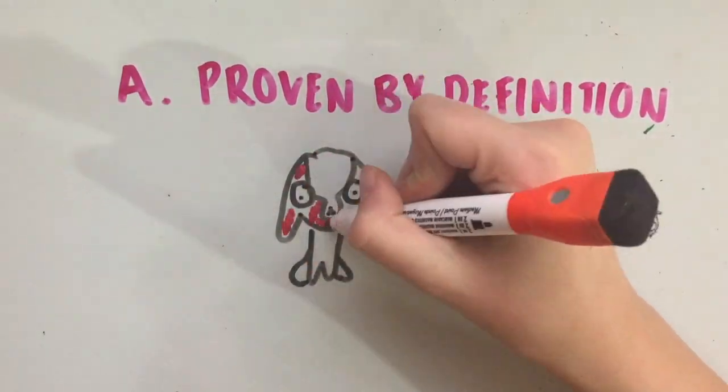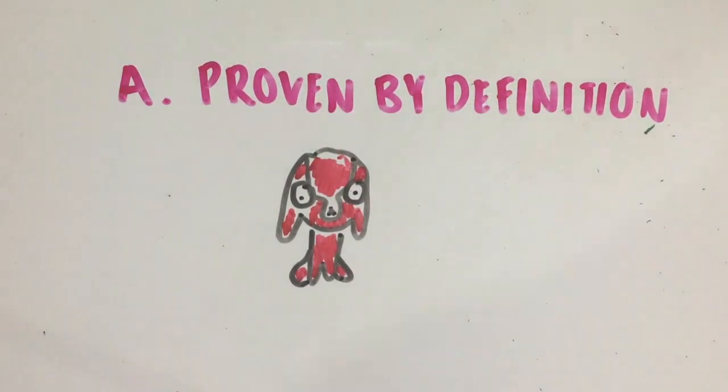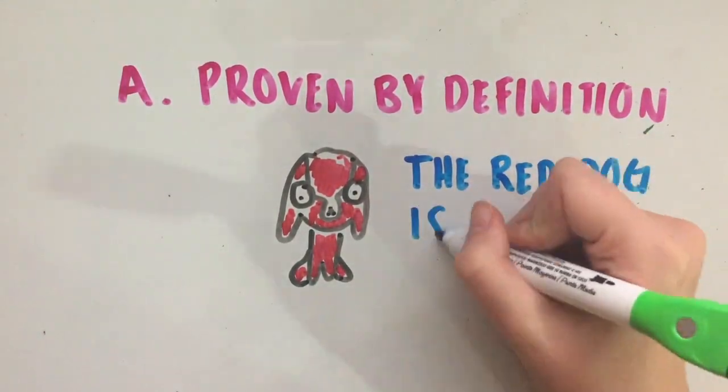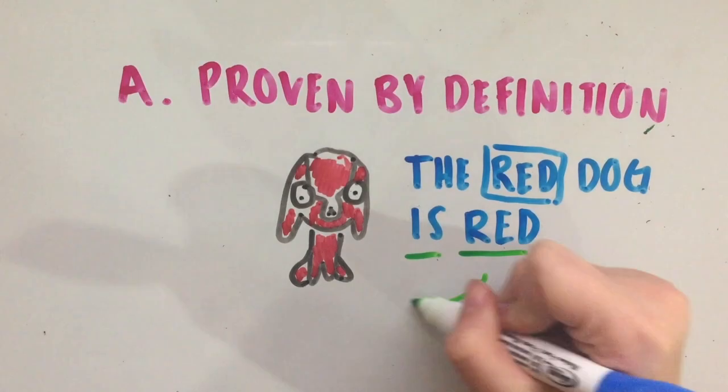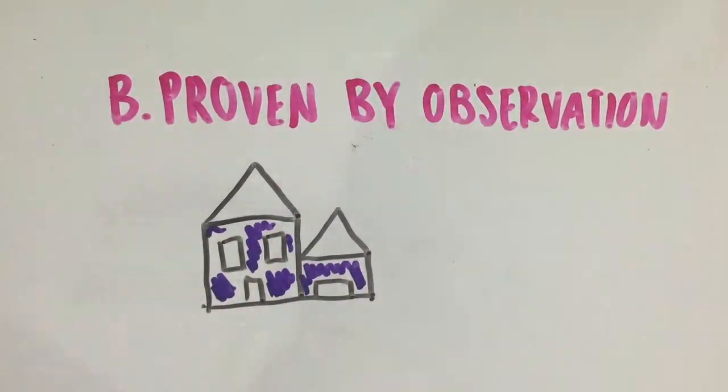The Vienna Circle said that only sentences that were A, proven by definition—for example, the red dog is red would be meaningful because the sentence itself states what is true—or B,